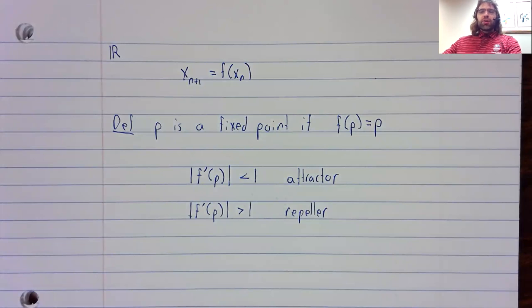If the largest eigenvalue is less than zero, it's an attractor, it's attractive, it's asymptotically stable. If it's greater than zero, it's a repeller, it's unstable.